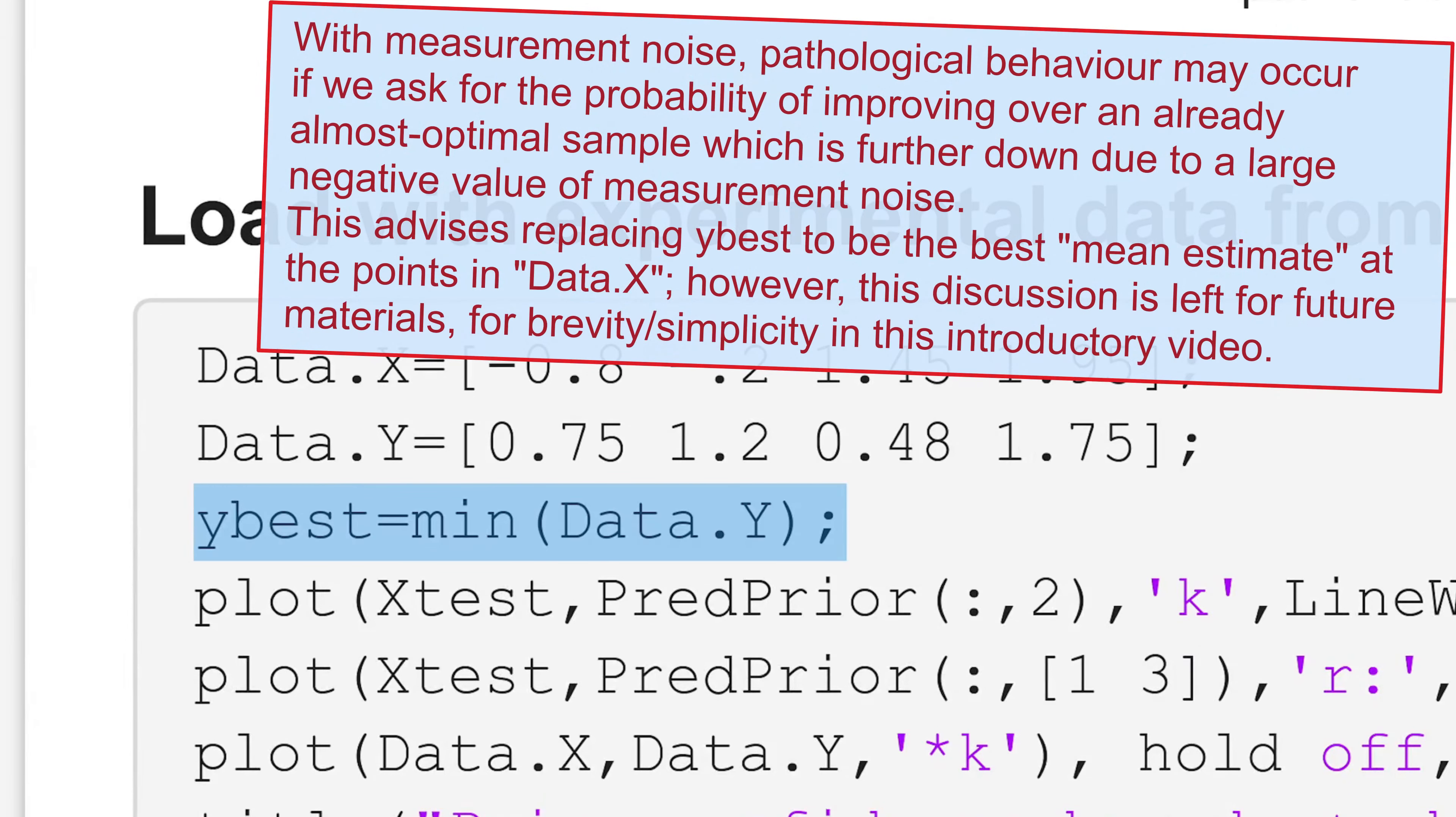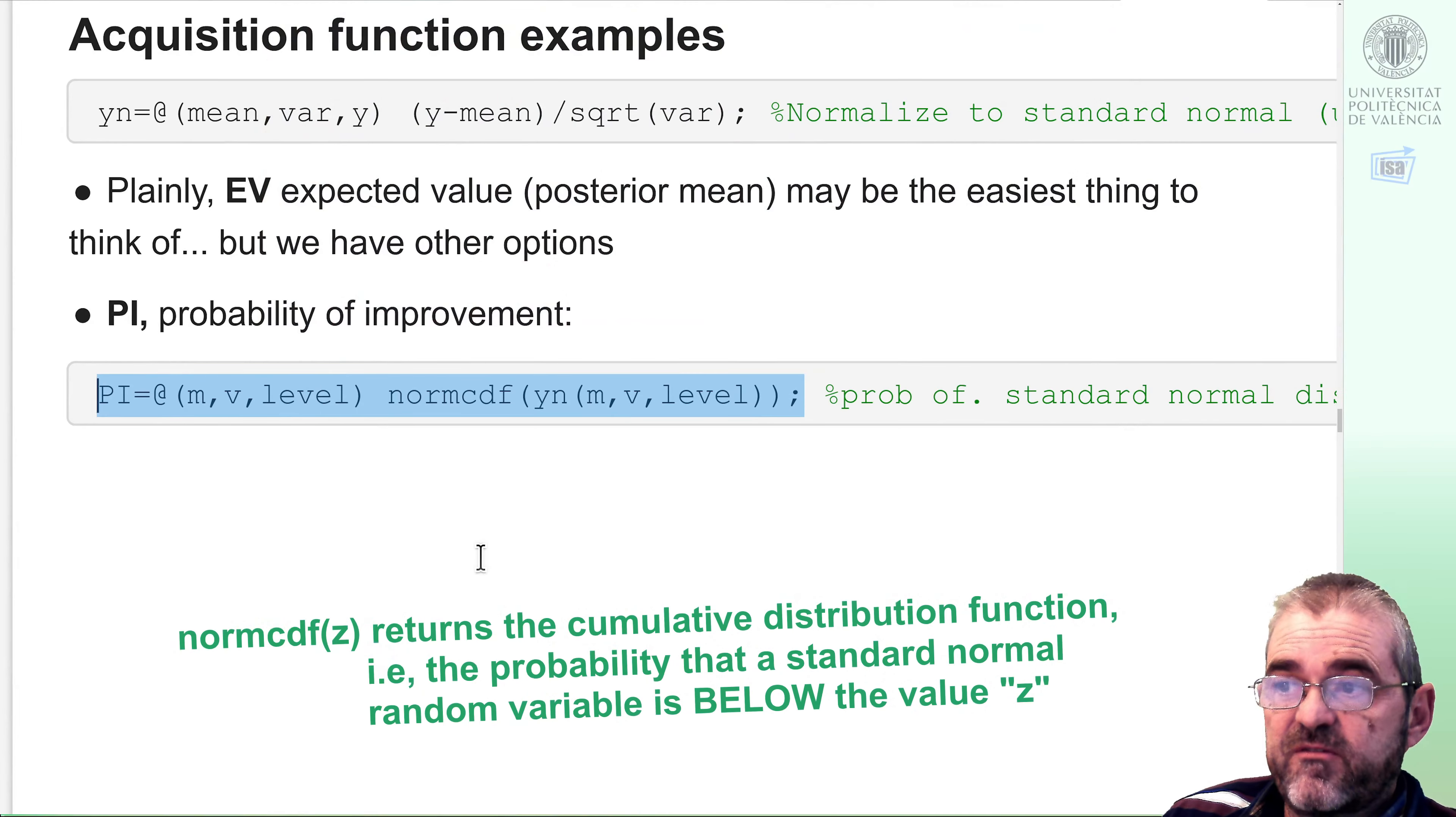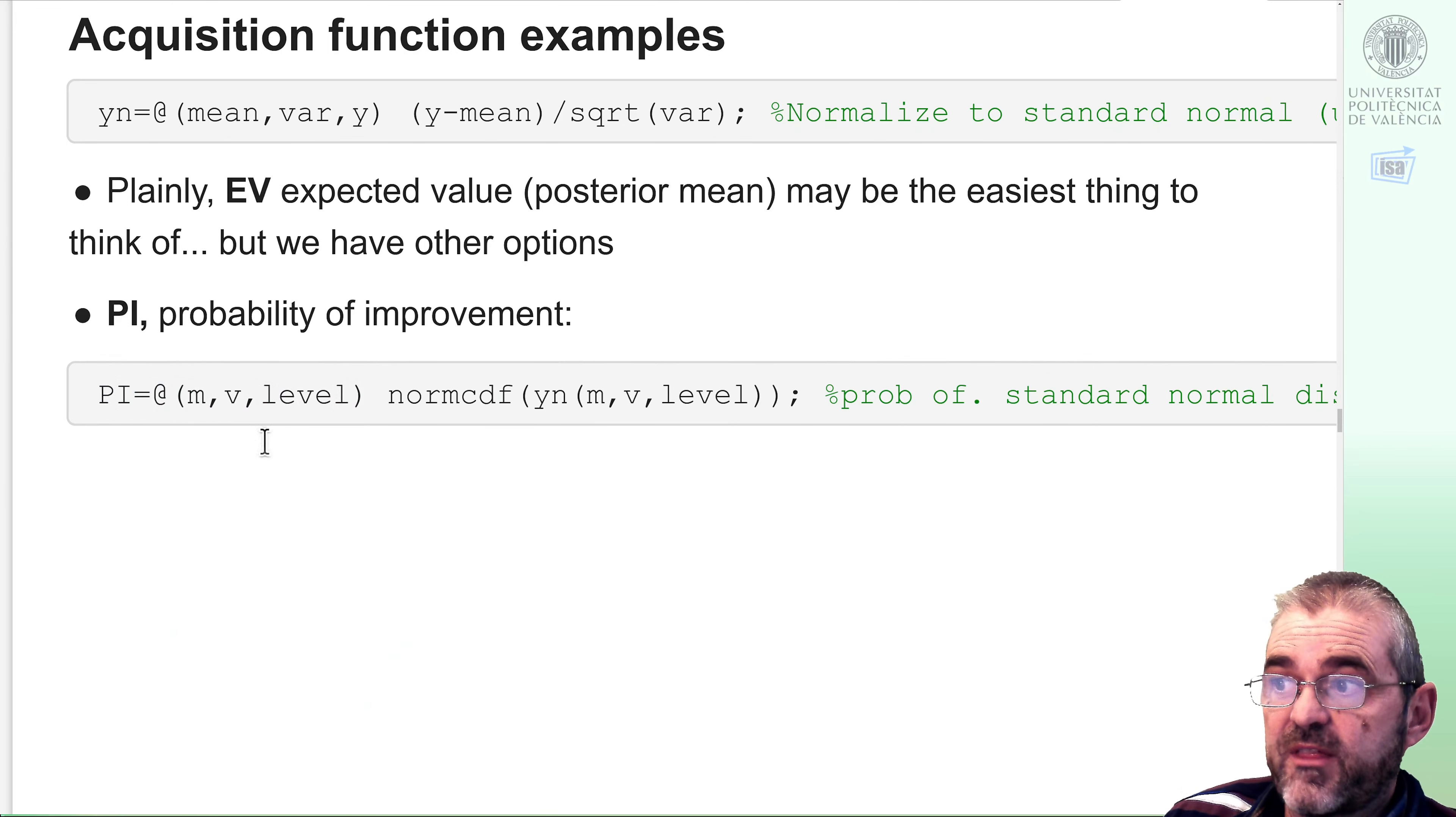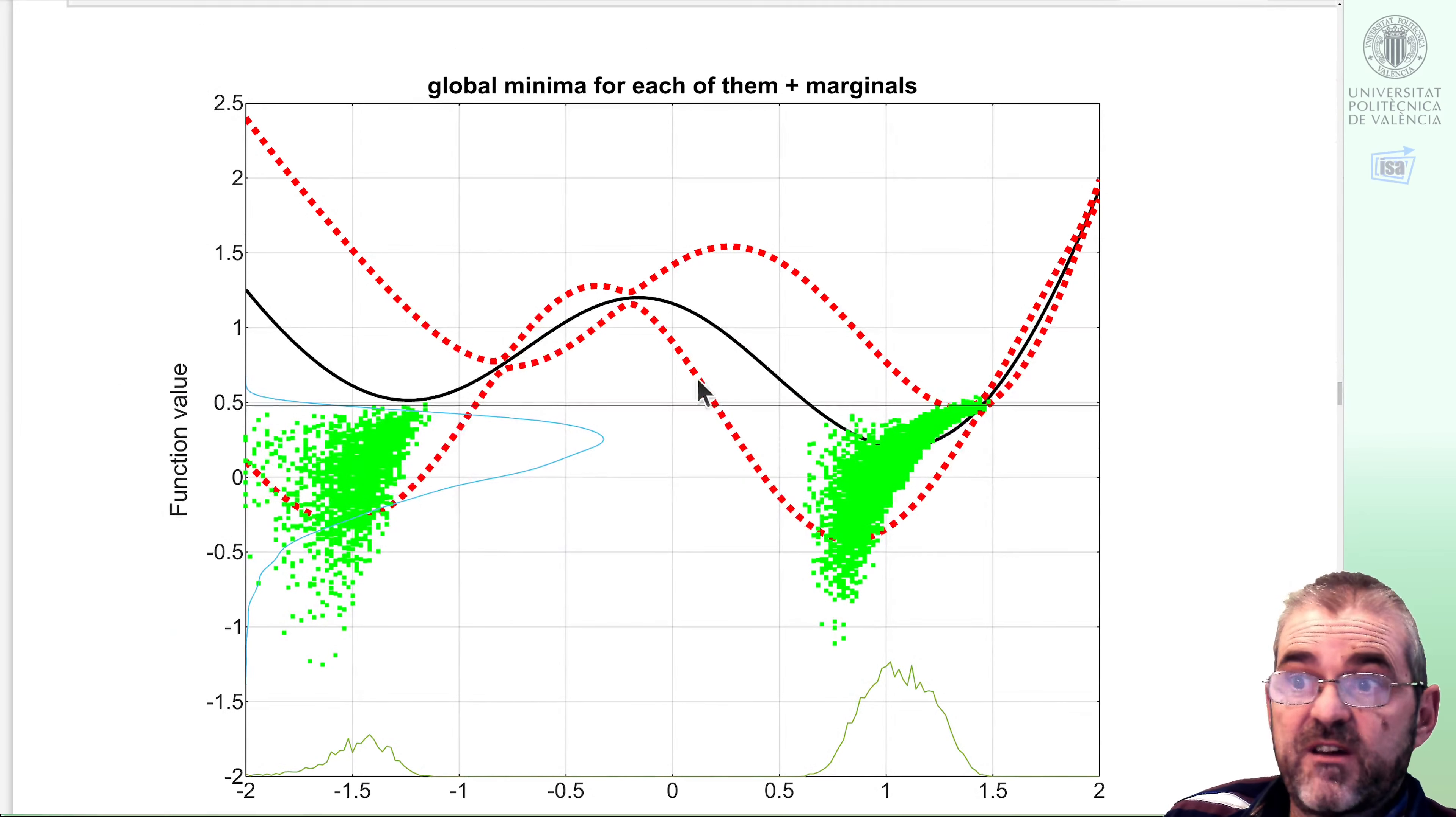With this cumulative normal distribution function, we obtain the probability that a given normal variable with this mean and this variance is below this level. Then we will call this function, replacing level by the best sample. Here we have it, the best sample in my historical records. I will skip further details on this cumulative distribution function. I want you to understand it via an example.